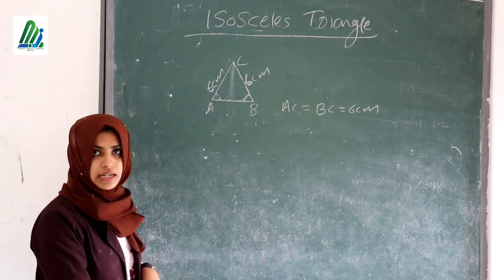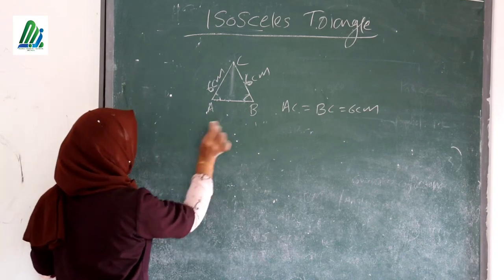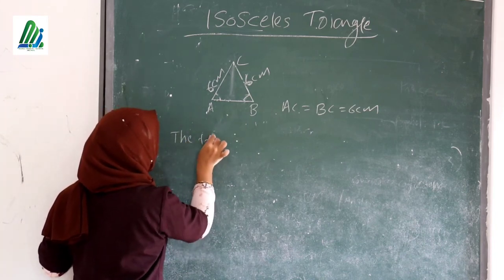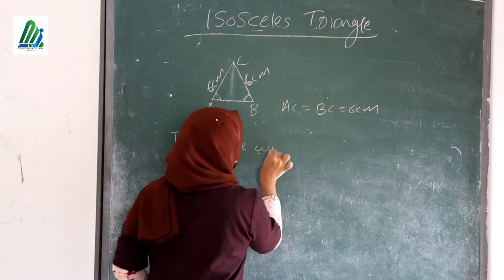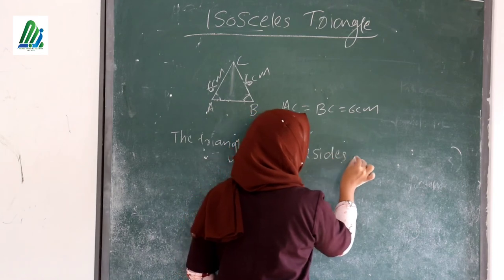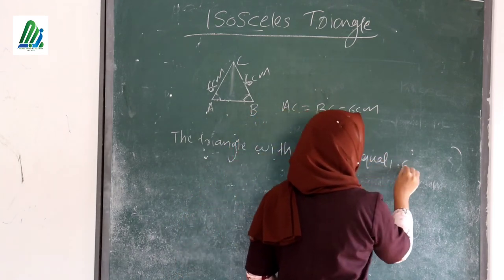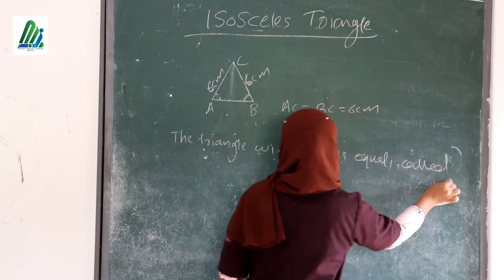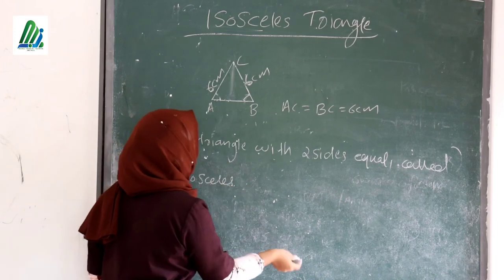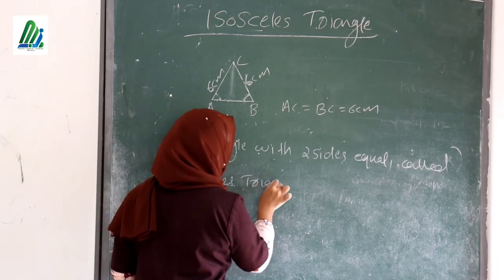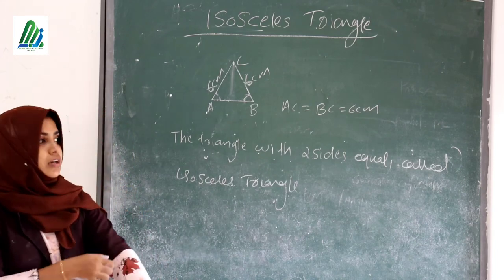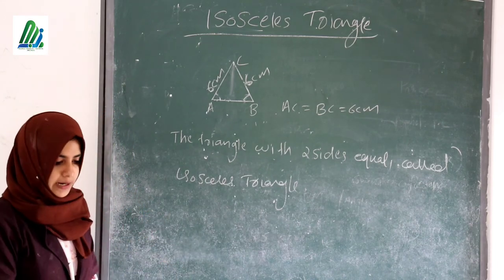Next, what is an equilateral triangle? In an isosceles triangle we only have two sides equal. Now we will learn about the equilateral triangle.